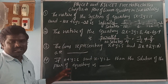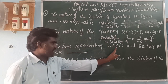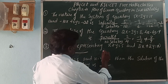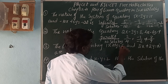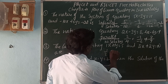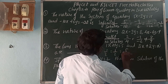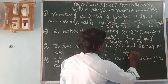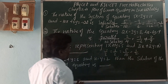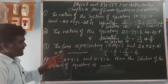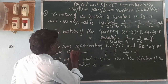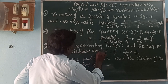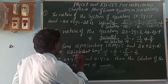Next, the lines representing x plus y is equal to 5 and 2x plus 2y is equal to 10. The x coefficient ratio, y coefficient ratio, and constant ratio: 1 by 2, 1 by 2, and 5 by 10 equals 1 by 2. So the three ratios are equal, meaning the lines are coincident lines with infinitely many solutions.